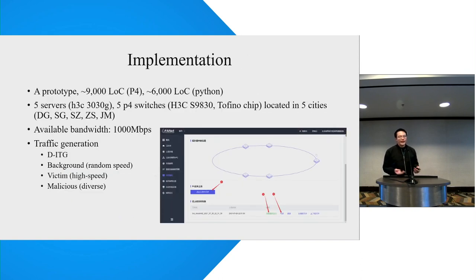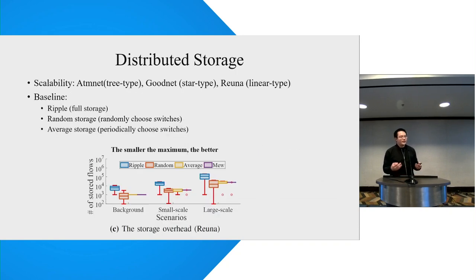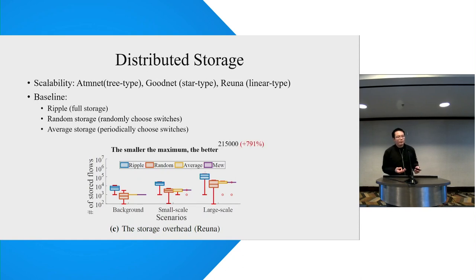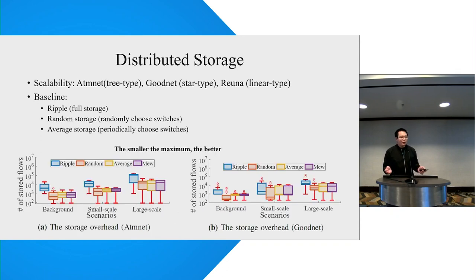We implement a prototype of MEW and build a testbed for evaluation. The testbed contains five servers and five P4 switches located in five cities. First, let's see the effectiveness of distributed storage. To prove the scalability of MEW, we compare it with a full storage solution, a random storage solution, and an average storage solution. As shown in the figure, MEW outperforms all other strategies in a linear-type topology — a smaller number means better performance. You can see similar results in other topologies. MEW can improve memory efficiency using the distributed storage mechanism.